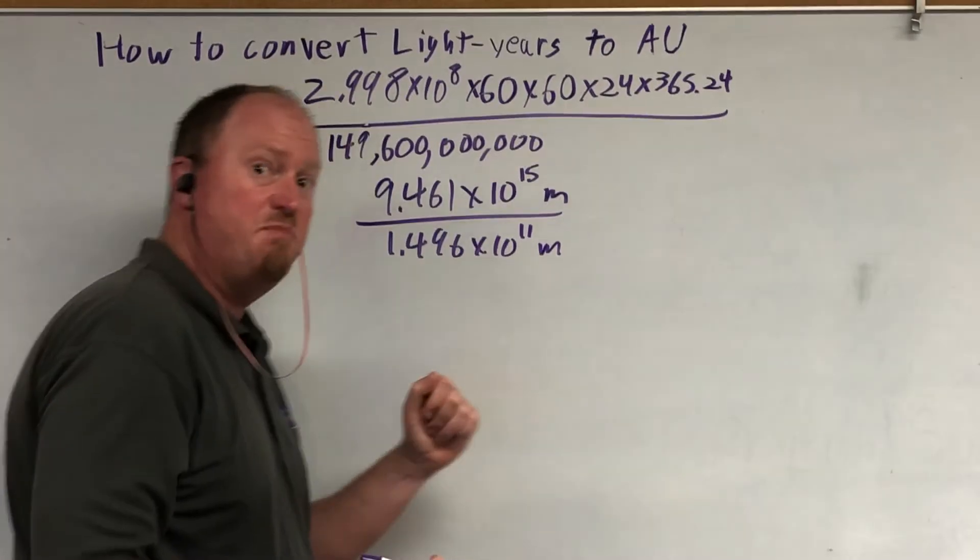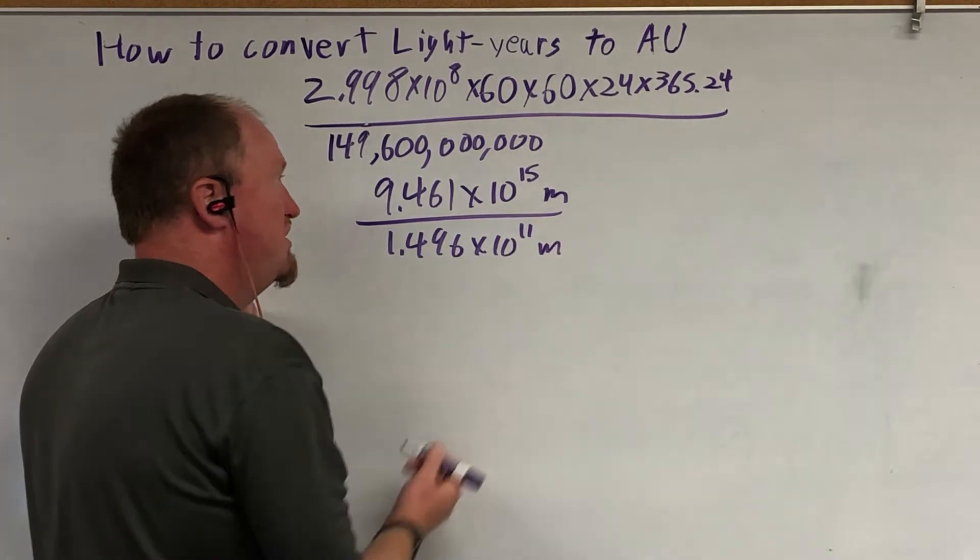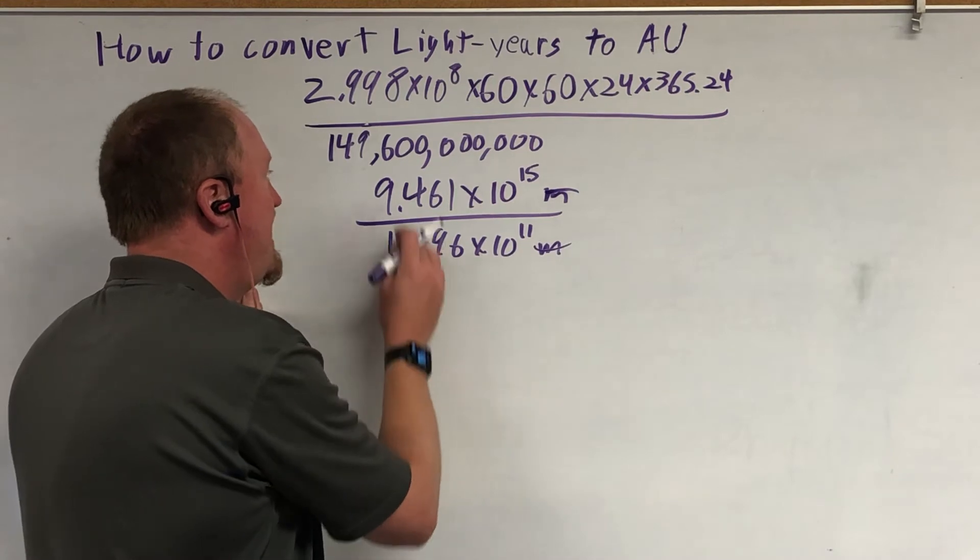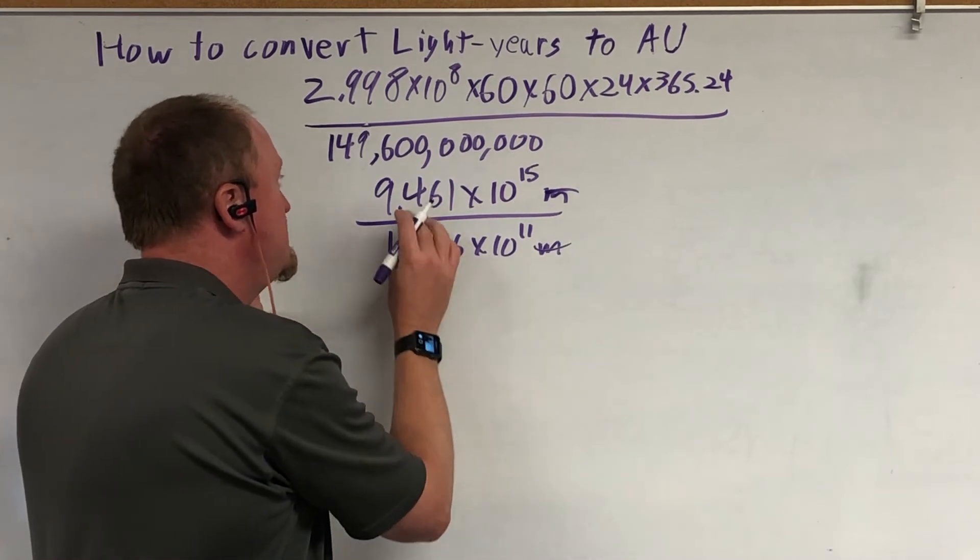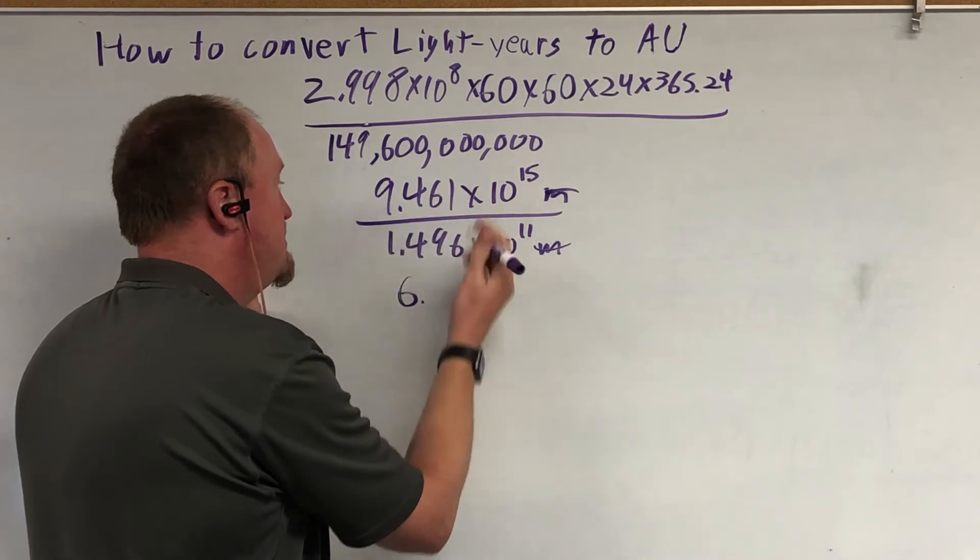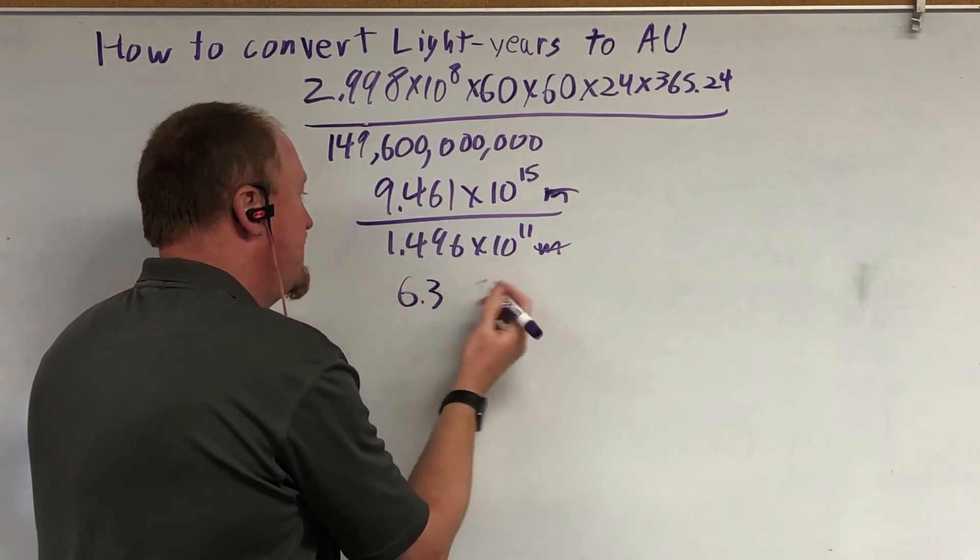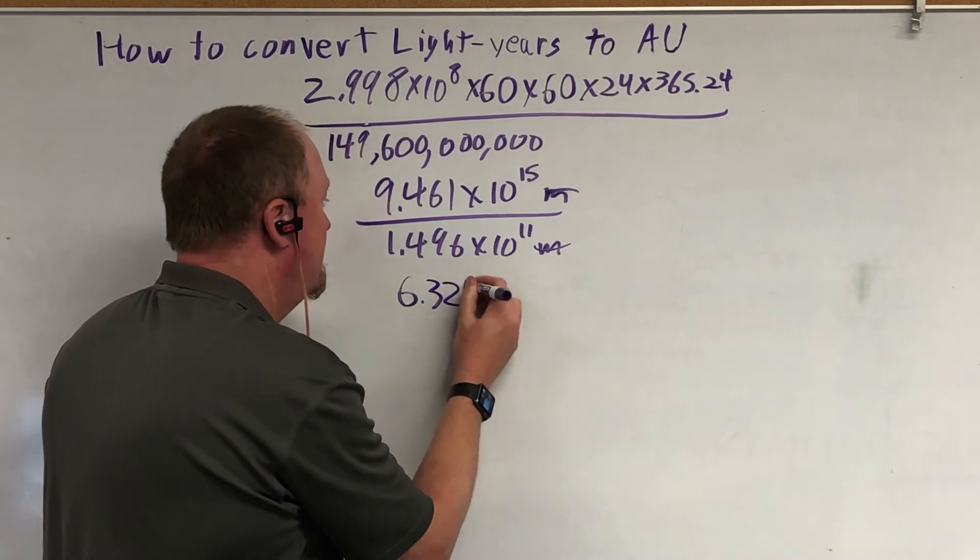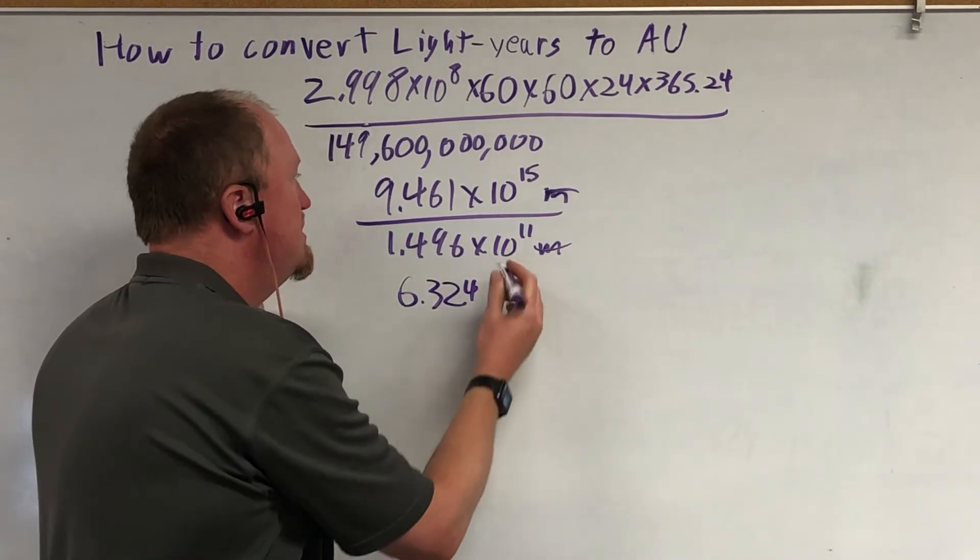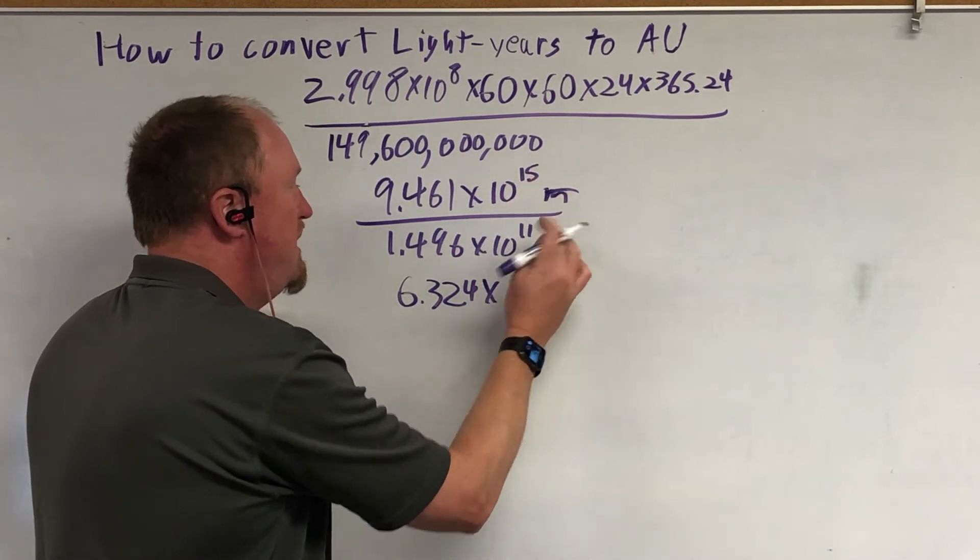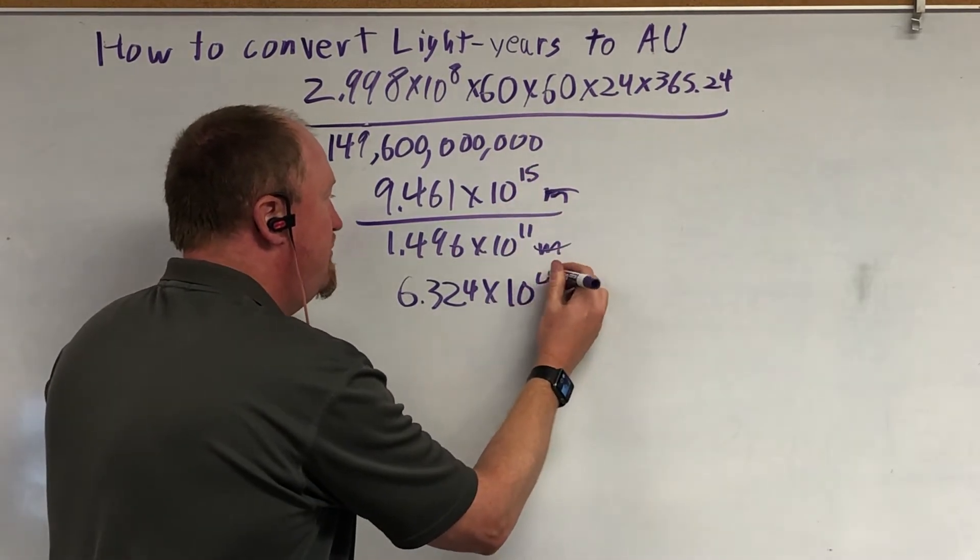And it's simple math. We cancel the units out, and 1.5 goes into 9, 6 times. 15 goes into 45. Now you just keep doing it. 3, 2, 4, I think we got. And 15 minus 11 is times 10 to the 4th.